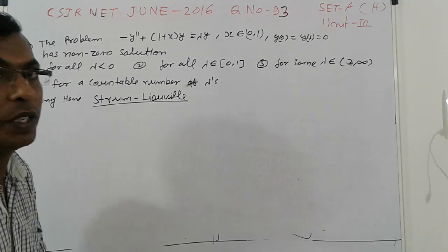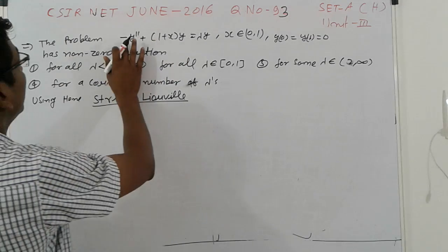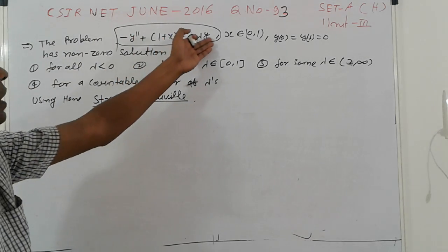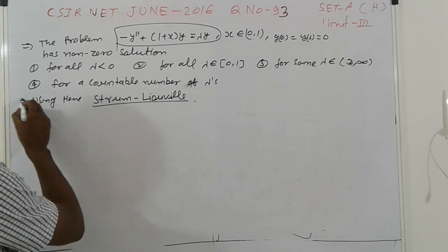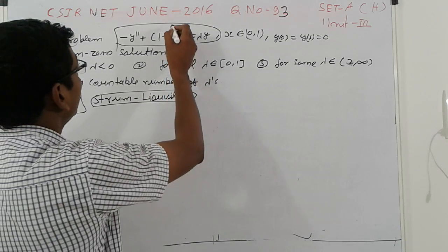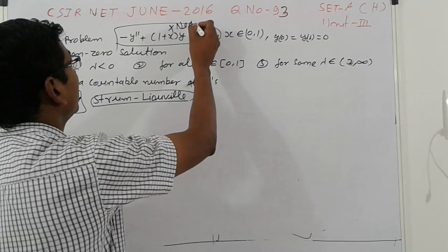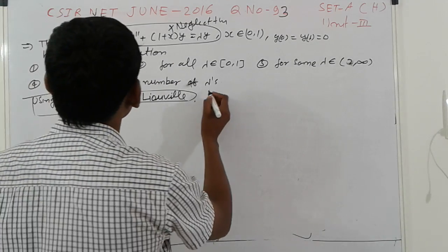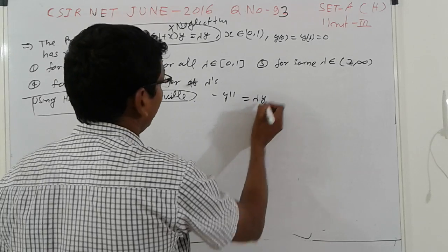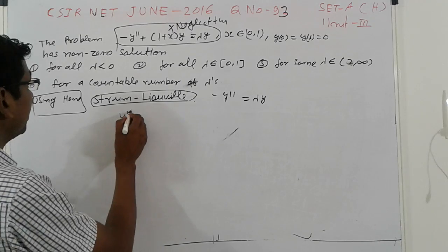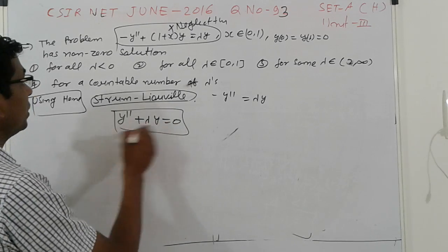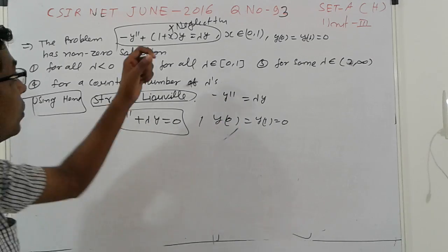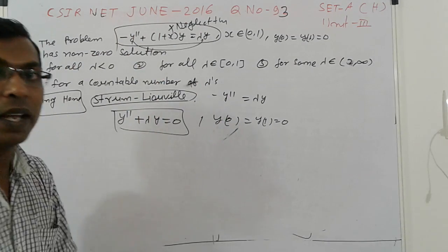Let's come to the problem. The given equation is y'' + (1 + x)y = λy. We apply the Sturm-Liouville framework, and we neglect the (1+x) term. After neglecting, we get: y'' + λy = 0, with boundary conditions y(0) = y(1) = 0. This is the Sturm-Liouville problem we use to find the eigenvalues.